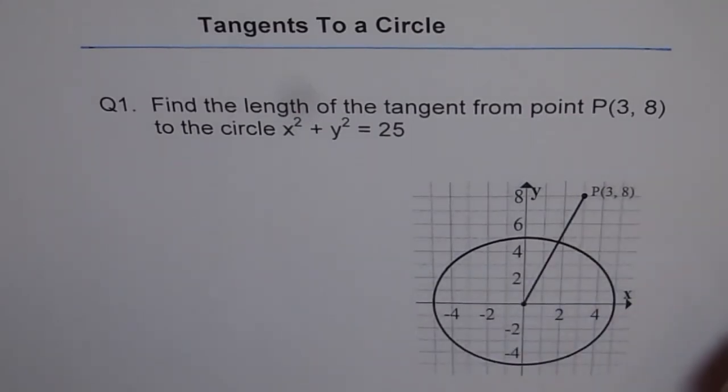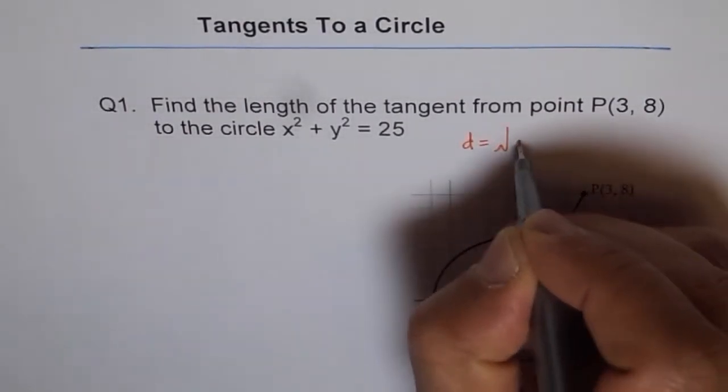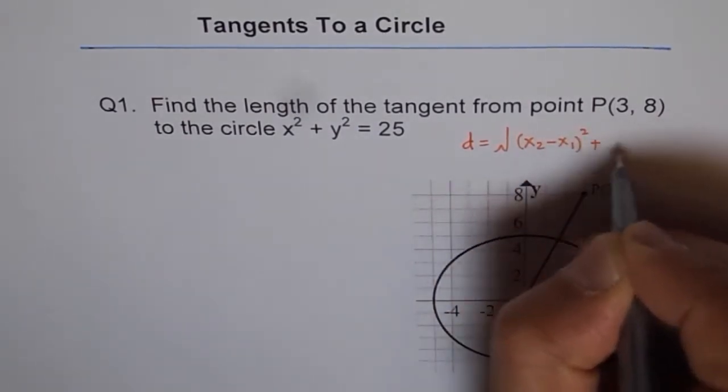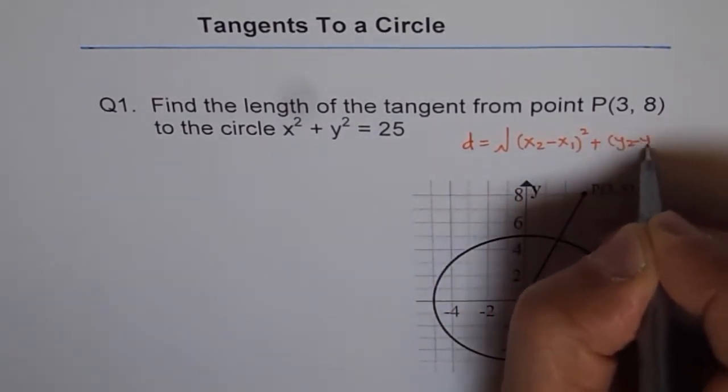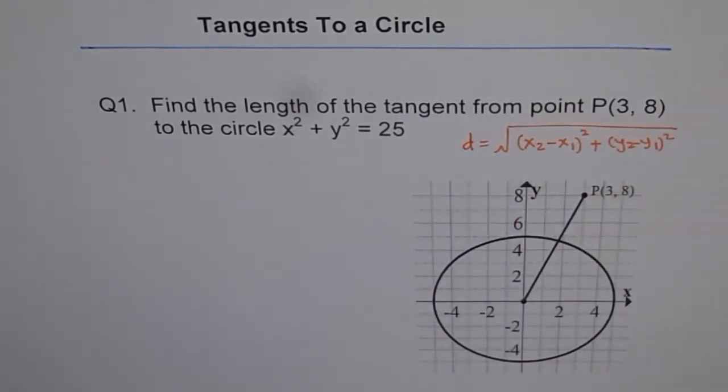which everybody uses to find distance between two points, and that is distance equals square root of (x2 minus x1) whole square plus (y2 minus y1) whole square. So that is the formula which gives you length between the two points.